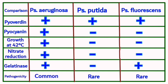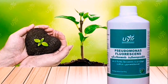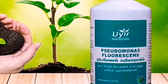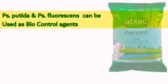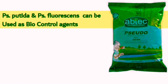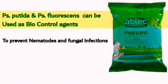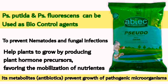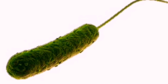Pseudomonas fluoresens and Putida are instead widely used as biocontrol agents in agriculture to take advantage of their natural presence in the soil, water and moist plant surfaces. Here, they prevent pathogenic microorganisms like fungi and nematodes from growing and help plants' roots to provide growth hormone producing precursors. For now, we'll focus on Pseudomonas aeruginosa.